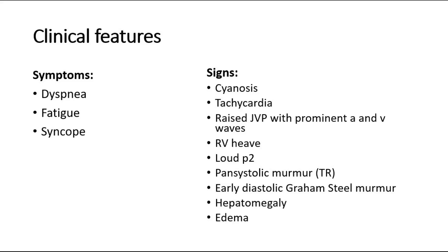Signs of cor pulmonale are cyanosis and tachycardia, raised JVP with prominent A and V waves, right ventricular heave, and loud P2.